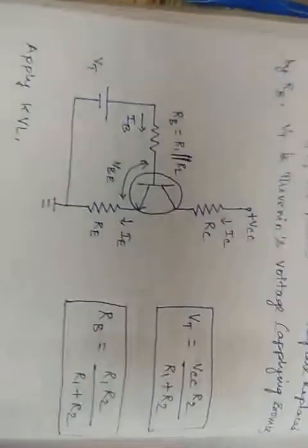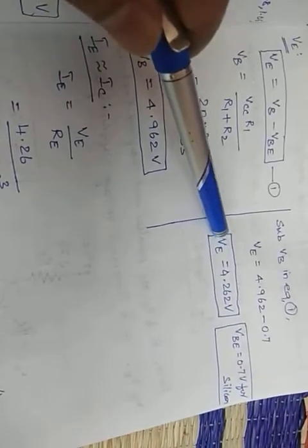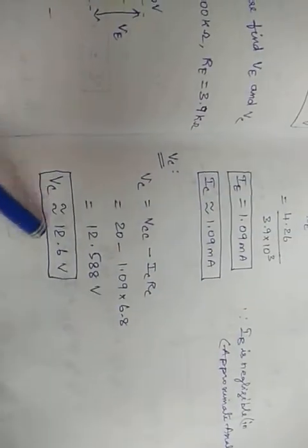These are the values asked in the question: VE = 4.262V and VC = 12.6V.